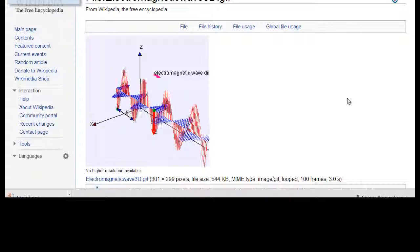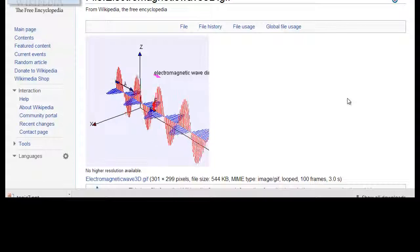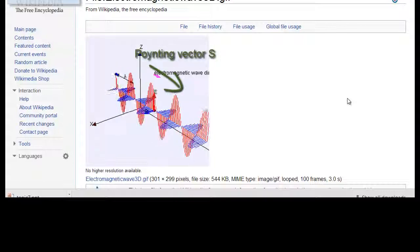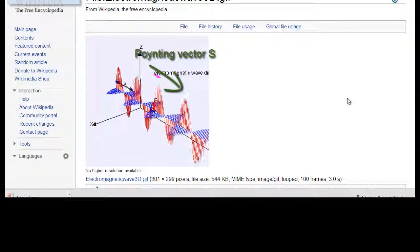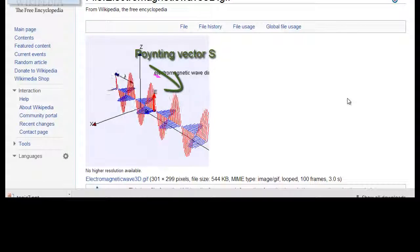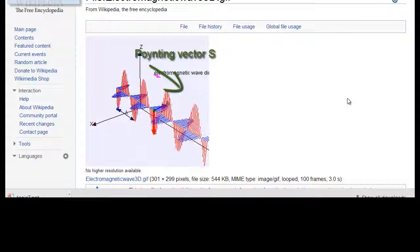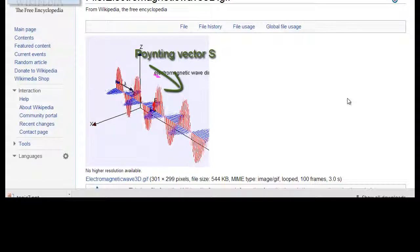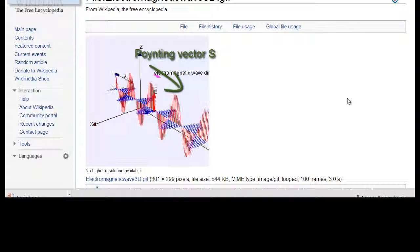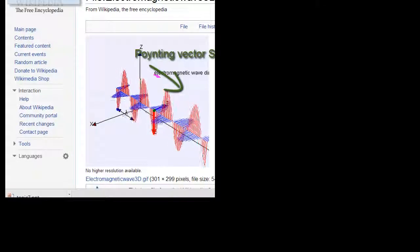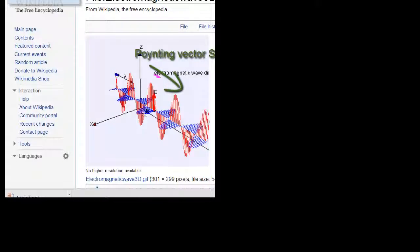The direction of propagation is given by what's known as the Poynting vector. Now, this is Poynting with a Y, it's not a typo, it's due to Mr. Poynting. It's a very interesting choice of last name, but it's good that he was the guy that discovered it because this Poynting vector tells us which way the electromagnetic field is propagating or pointing towards.